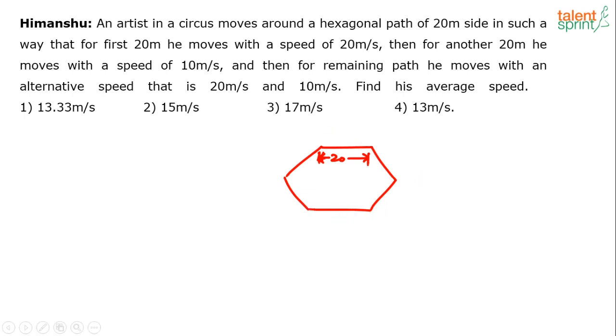So what he does is for the first 20 meters he moves at the speed of 20 meters per second. Let's assume he has started from this point, this starting point, moving in this direction at 20 meters per second. Then for another 20 meters he moves at 10 meters per second.